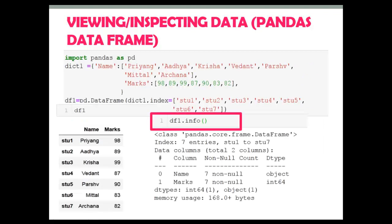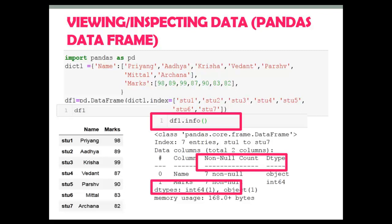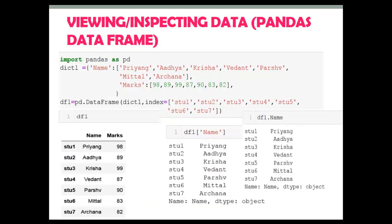Next, a very important function: info. The info function is used to print a concise summary of a DataFrame. This method prints information about a DataFrame including index dtype, column dtype, non-null values, and memory usage.